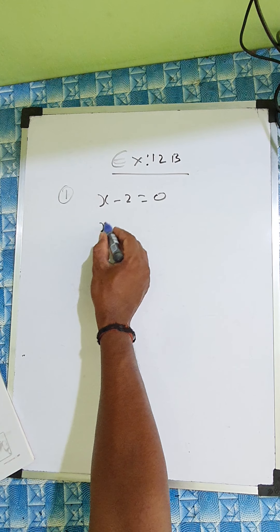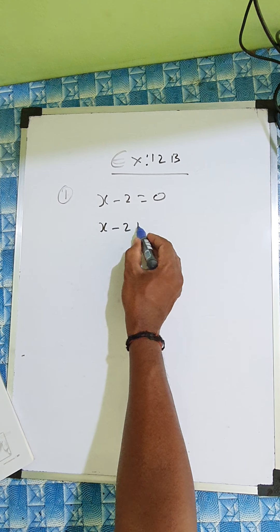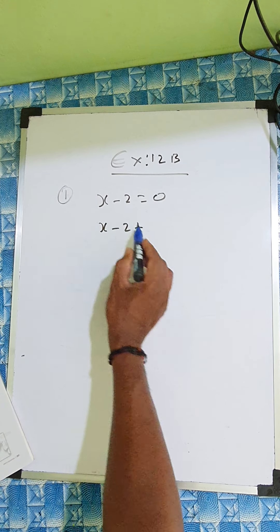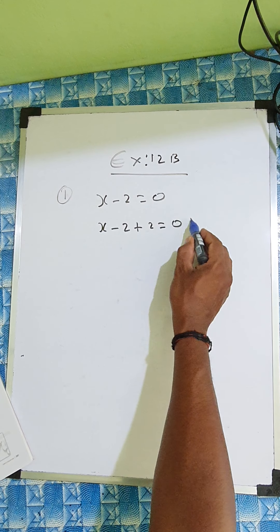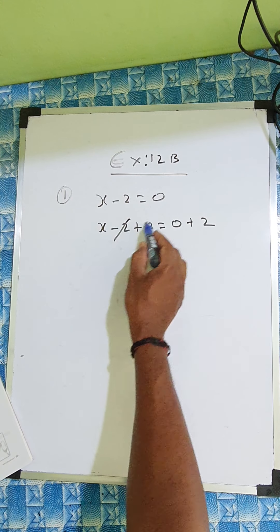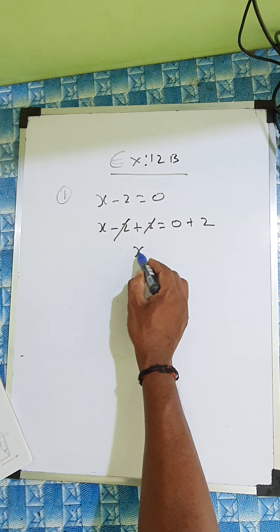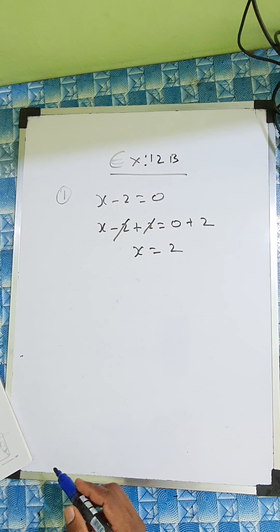So x minus 2 — you put here plus 2. If it's minus 2, you put plus 2. Equal to 0, you write here also plus 2. So these two cancel, x equal to 2. Understood?